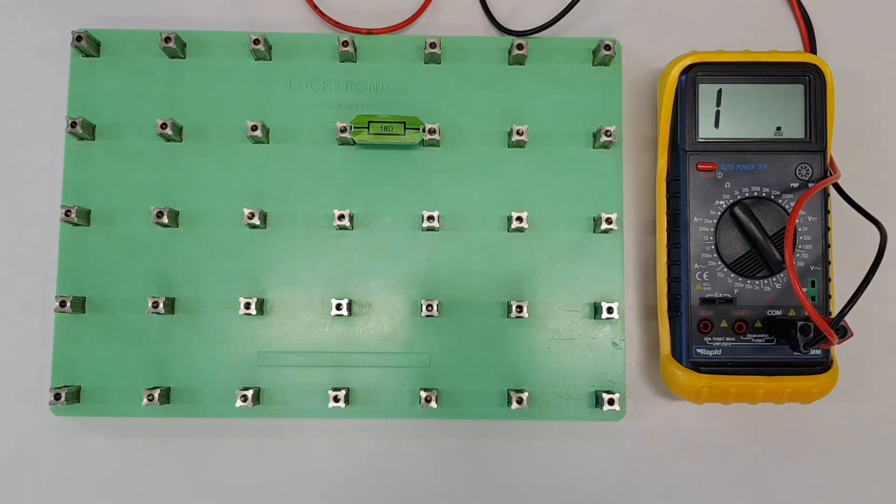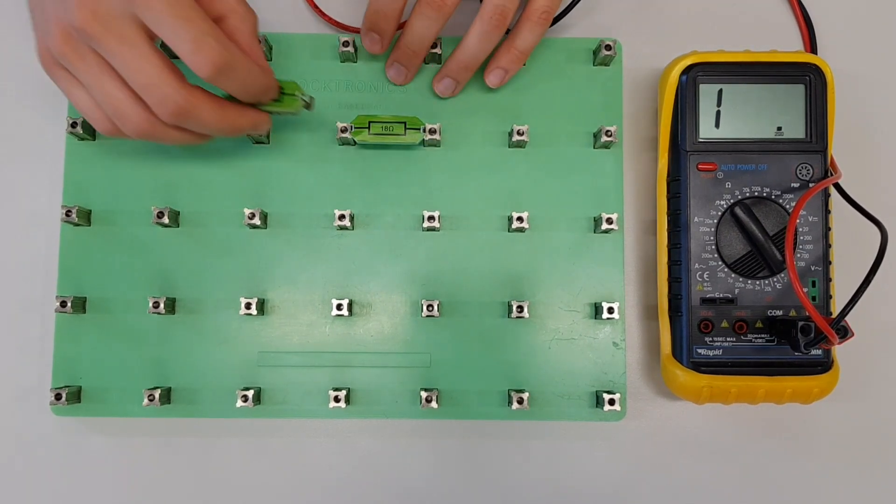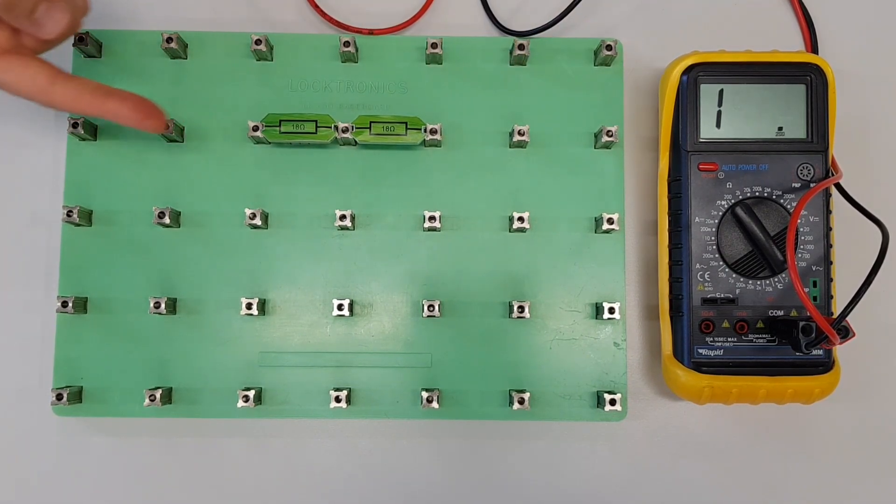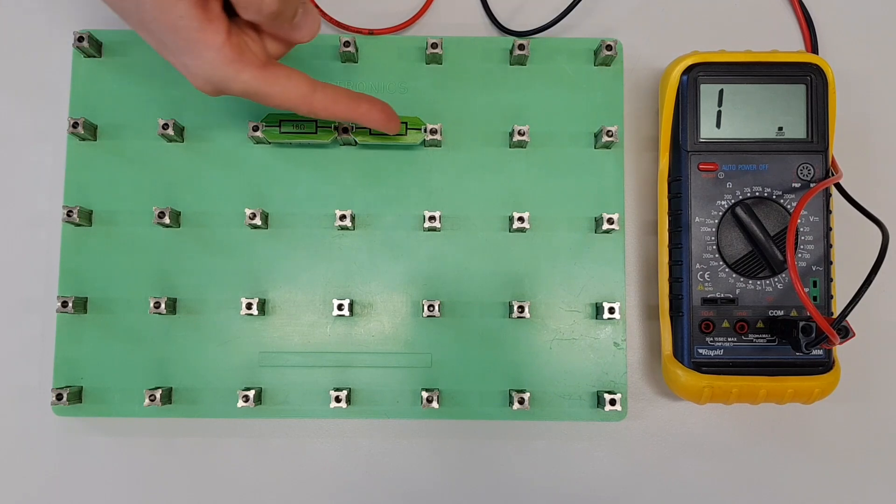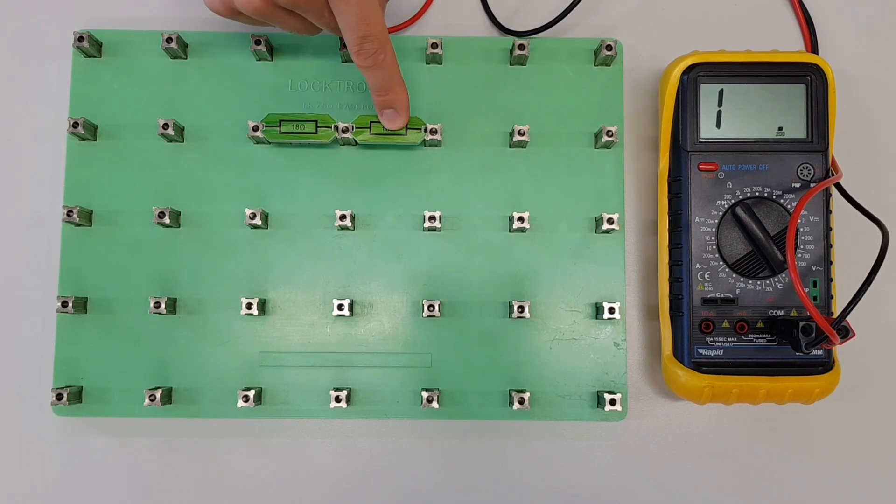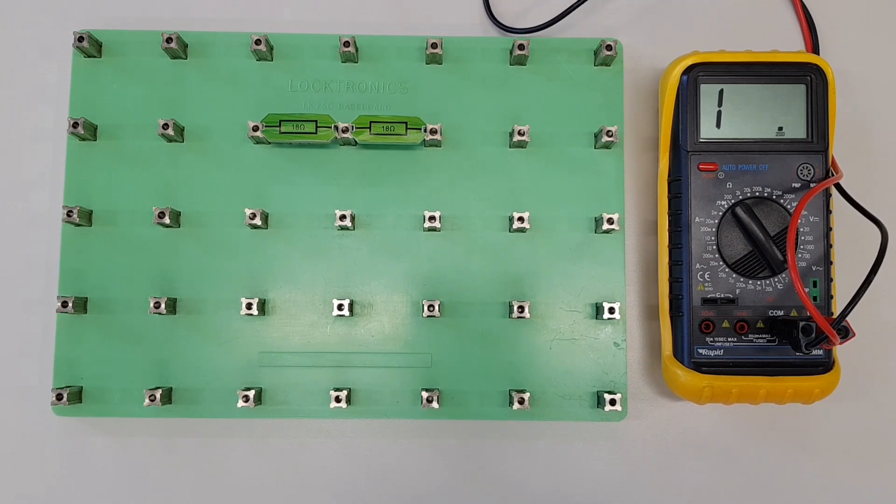So what is a series circuit? Well, a series circuit is a circuit where the current flowing around the circuit has to flow through one load before it reaches another load. So here, if we were to connect this up to a supply, current would flow through one resistor and then it would flow through the next resistor. That's what we call a series circuit.